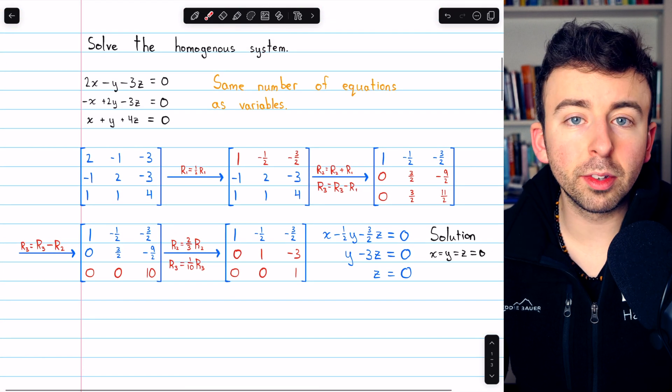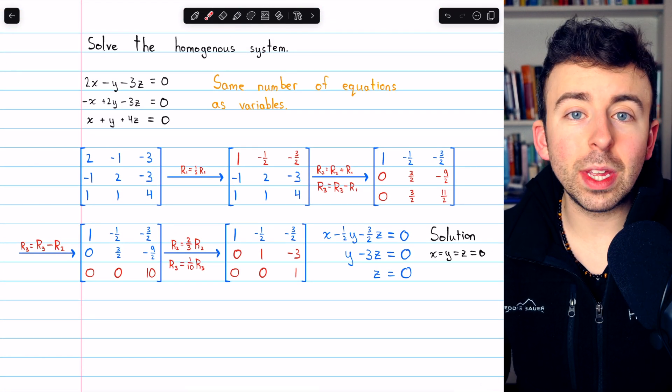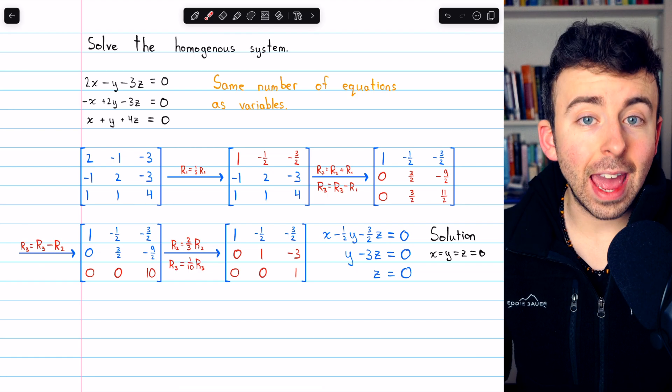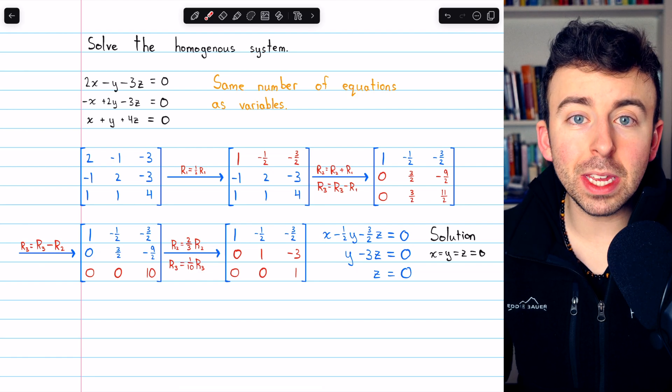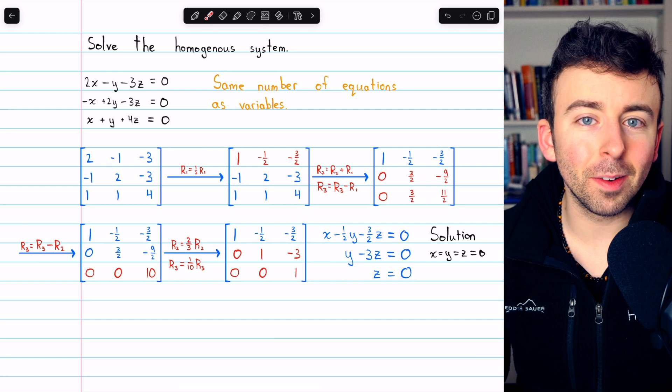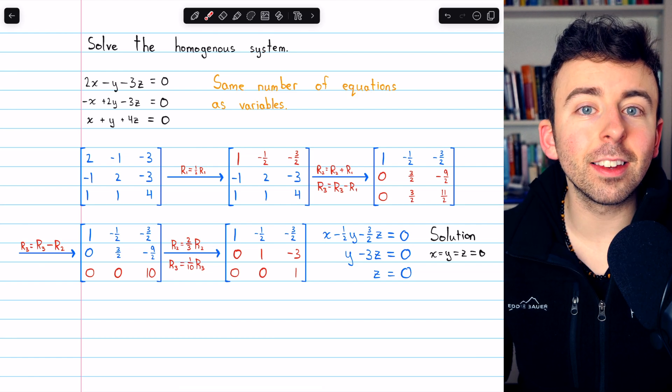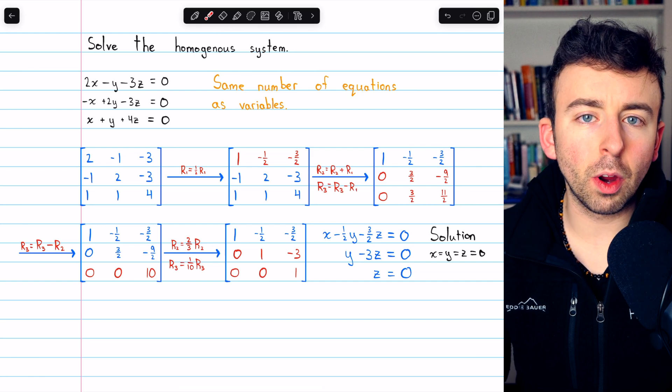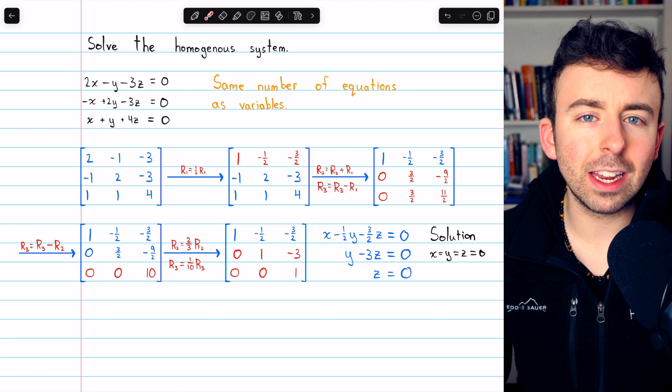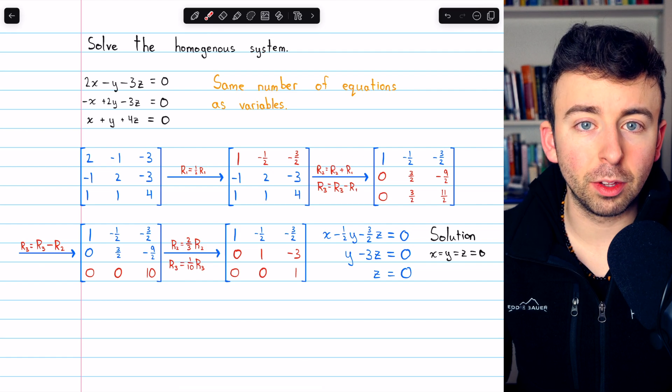So those are two examples of solving homogeneous systems. In one case, we just had a trivial solution. And in the other case, we had infinitely many solutions. And we were able to identify that would be the case just by looking at the system because we had more variables than equations, which guarantees some free variables.